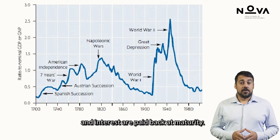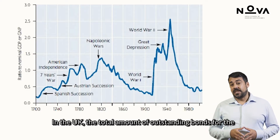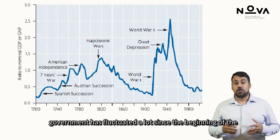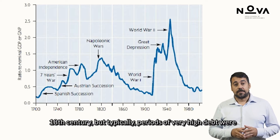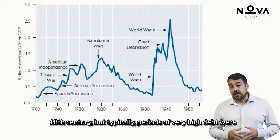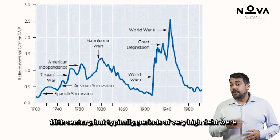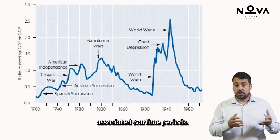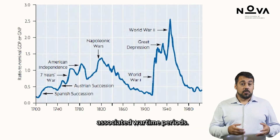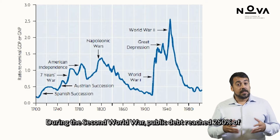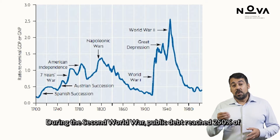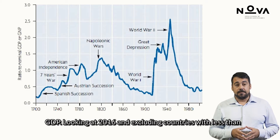In the UK, the total amount of outstanding bonds for the government has fluctuated a lot since the beginning of the 18th century, but typically periods of very high debt were associated with wartime periods. During the Second World War, public debt reached 250 percent of GDP.